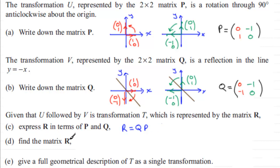Now we've got to go on and find the matrix R, so clearly we just got to carry out this matrix multiplication. So therefore what we've got is R is going to equal the matrix Q, which is (0,-1; -1,0), and we multiply it with the matrix P, which is as you can see up here (0,-1; 1,0).